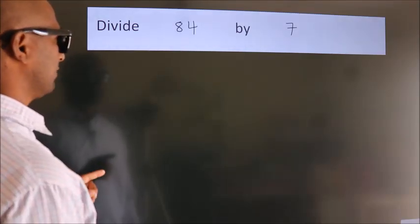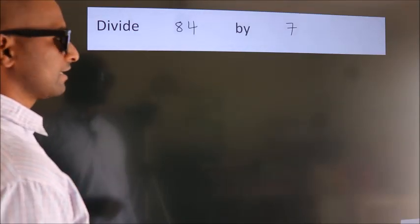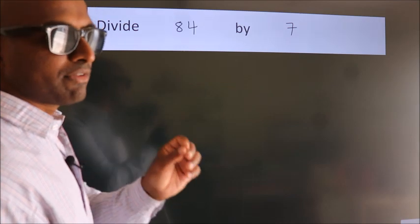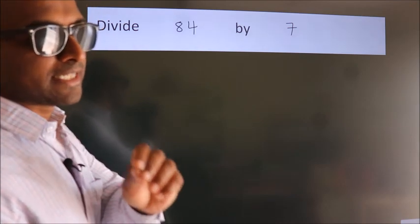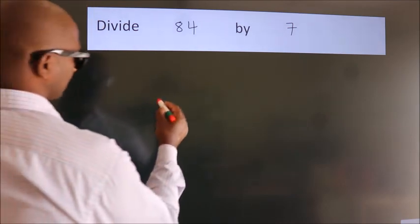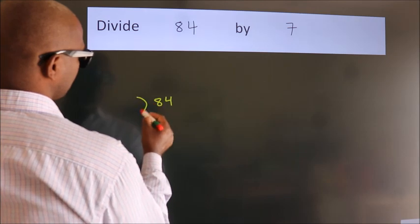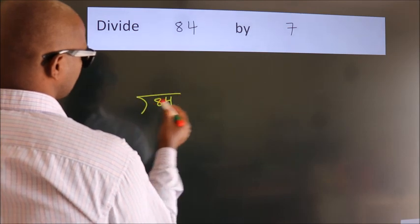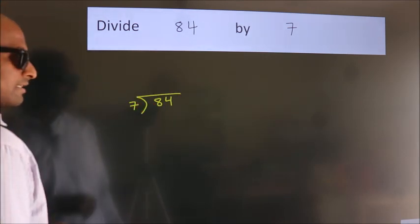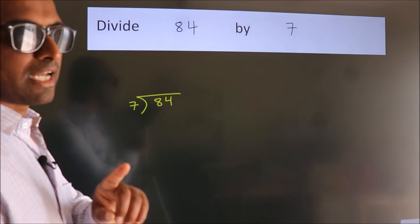Divide 84 by 7. To do this division, we should frame it in this way: 84 here, 7 here. This is your step 1.